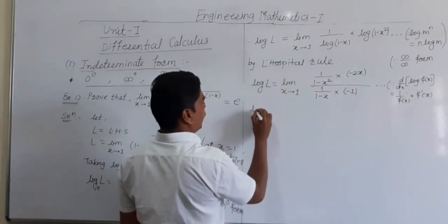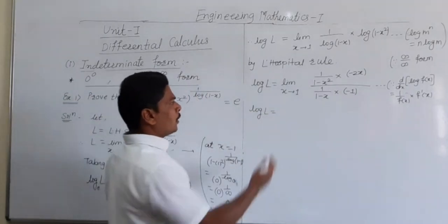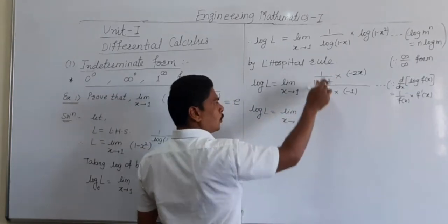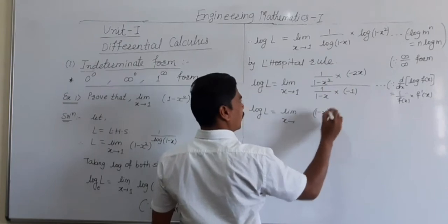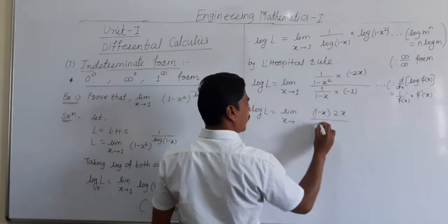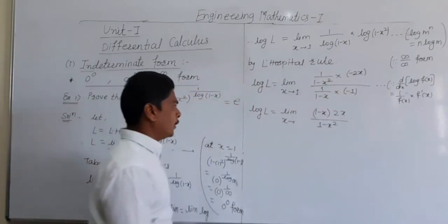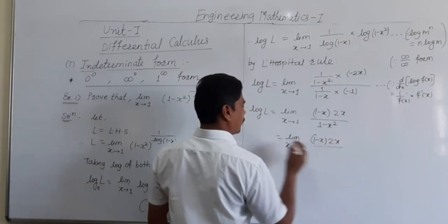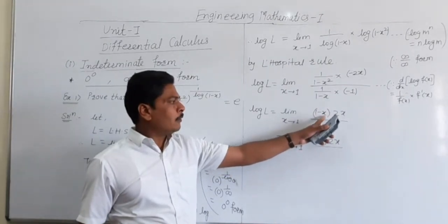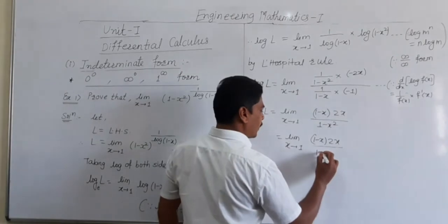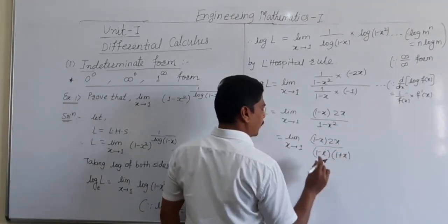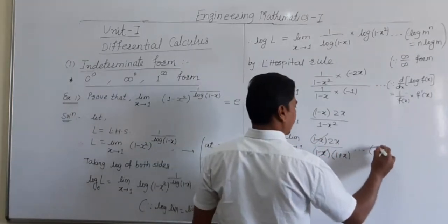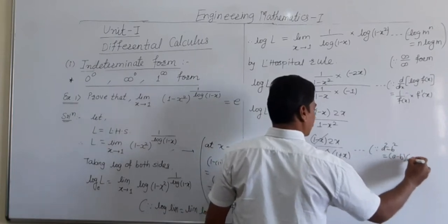Simplifying, the minus signs cancel and taking the reciprocal of the fractional function. We get limit x tends to 1 of (1 minus x squared) into 2x, divided by (1 minus x). Factoring 1 minus x squared as (1 minus x)(1 plus x) using the A squared minus B squared formula, the (1 minus x) terms cancel.